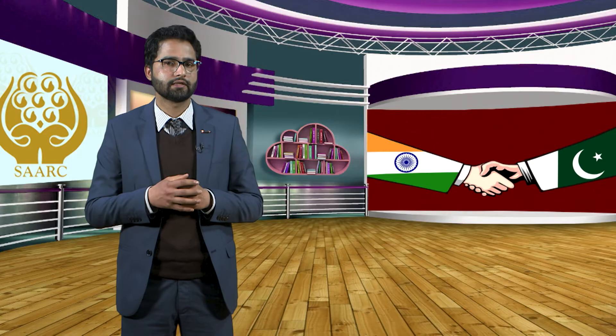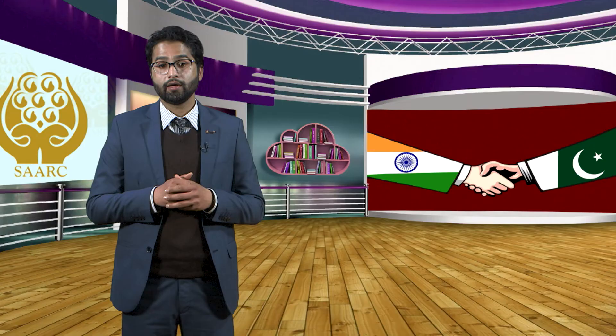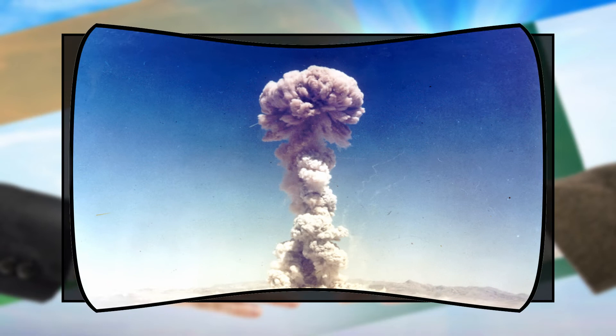A major breakthrough happened in May 1997 during the ninth SAARC summit in Maldives, where Prime Ministers I.K. Gujral of India and Nawaz Sharif of Pakistan had a 90-minute meeting. They agreed to set up working groups to handle contentious issues such as Kashmir and to establish a hotline between the two prime ministers in addition to the existing military one. Including Kashmir in the agenda was a compromise from India and raised hopes of rapprochement between the major South Asian neighbours.